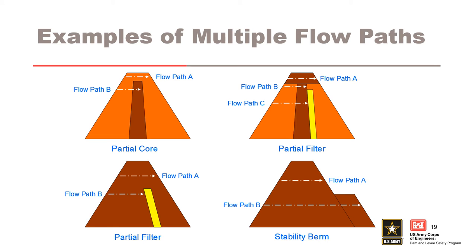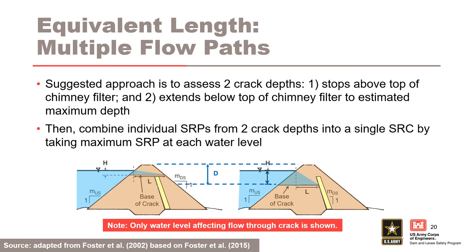At the bottom right, this dam has no filters and the downstream berm lengthens the flow path for concentrated leak erosion. The crack depth D may span two different flow paths. The suggested approach is to assess two crack depths individually: one where the base of the crack is at the top of the inclined chimney filter, and two where the base of the crack extends below the top of the inclined chimney filter to the maximum crack depth. The equivalent flow path length varies for each scenario. The individual system response curves from two crack depth scenarios can be combined into a single system response curve by using the maximum system response probability at each water level.